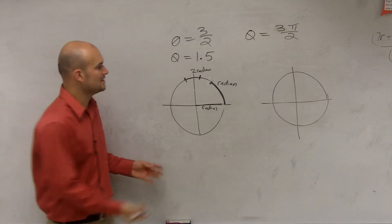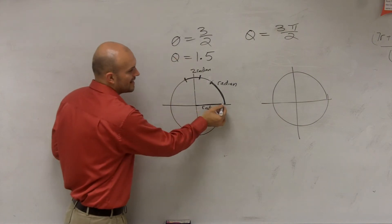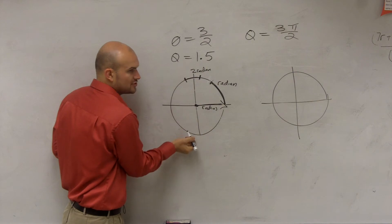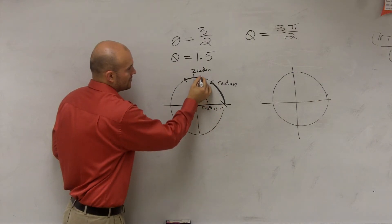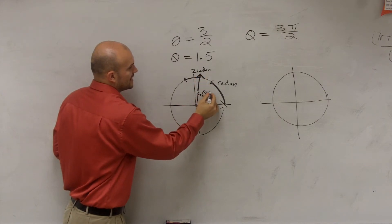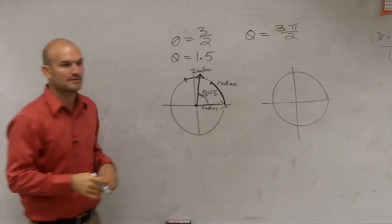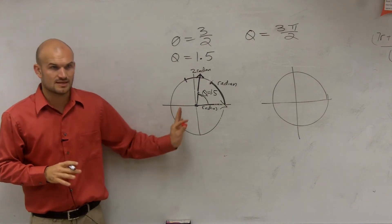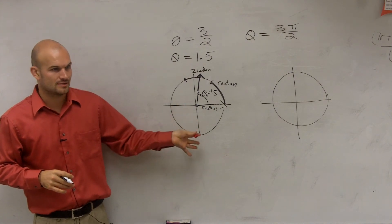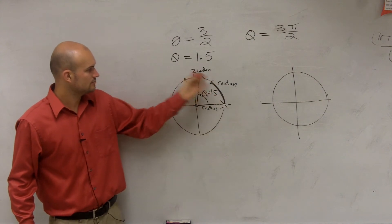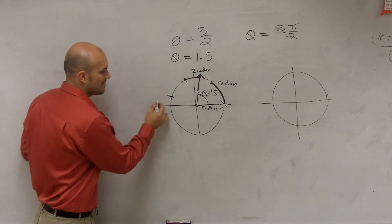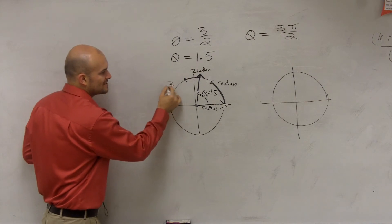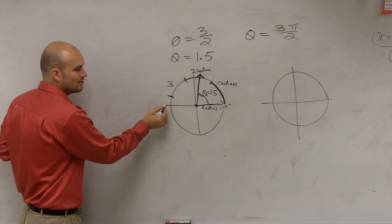Halfway between there, right? Somewhere right around there. So therefore, the angle of theta equals 1.5 is the rotation of a ray about your vertex at the center to about that angle. So that is when theta equals 1.5 or 3 halves. One radian, two radians, three radians — and then what's halfway around? So if that's three radians, then halfway around the circle is how many radians?